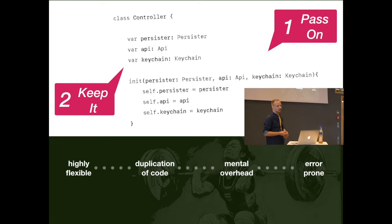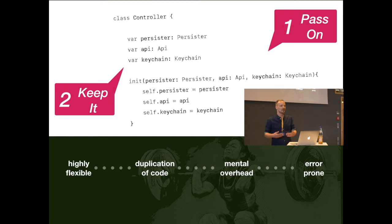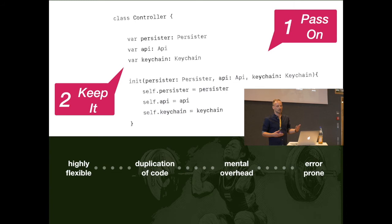Before going to the next slide, I want to separate two steps conceptually. Step one: pass on — you are providing to someone a value that knows how to do something, and the important question is who actually passed it on to me. Step two: keep it — having access to one or many of those things. The important question is: when someone else gave them to me and stored them, why do I have to store them again? Keep these steps in mind.